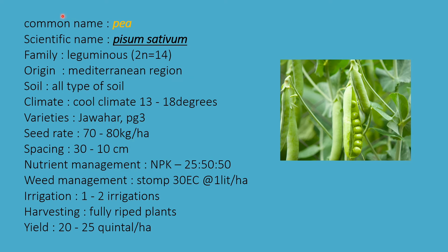The next pulse crop is pea. Scientific name is Pisum sativum, family Leguminaceae. Chromosome number 2n = 14, origin Mediterranean region. All types of soils are suitable, and cool climate is required; 13 to 18 degrees is best. Varieties are Johar and PG3. Seed rate is 70 to 80 kg per hectare. Spacing is 30 × 10 cm, with 30 cm row to row and 10 cm plant to plant.